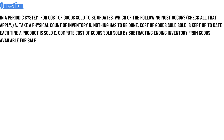Option C: compute cost of goods sold by subtracting ending inventory from goods available for sale. The correct answers to this question are A and C.